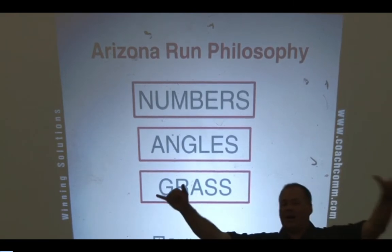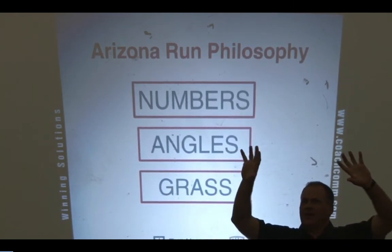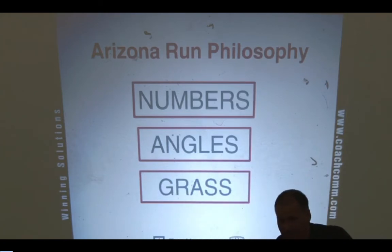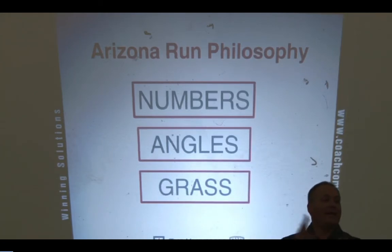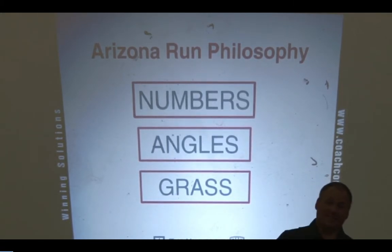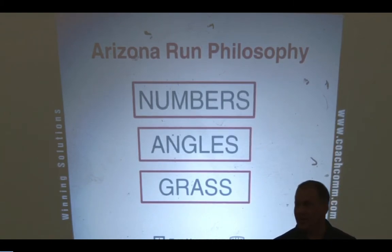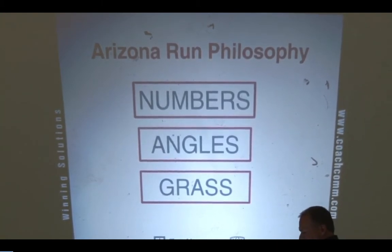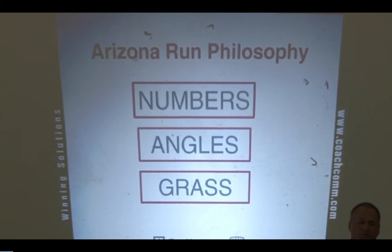If you add a guy in a box — in other words, if you're not four wide, but you're three wide receivers and a tight end — if you add a number, they add a number. So now if they got eight in a box, you better throw it. If they got seven, you can run it, but it's got to be a zone read. If it's six in a box, you can run anything you want, you can man on man. The first principle is run and throw the numbers.